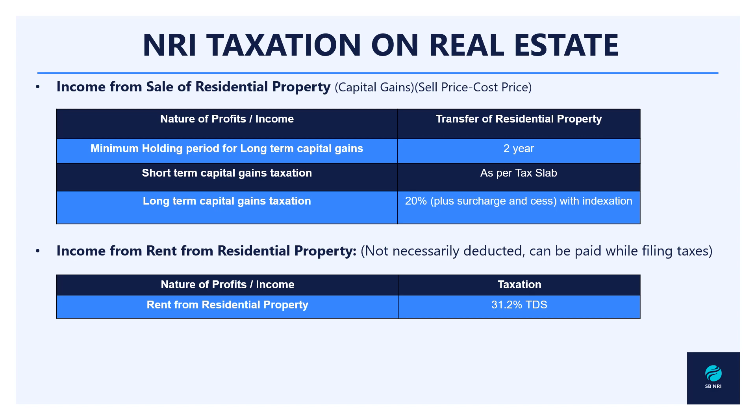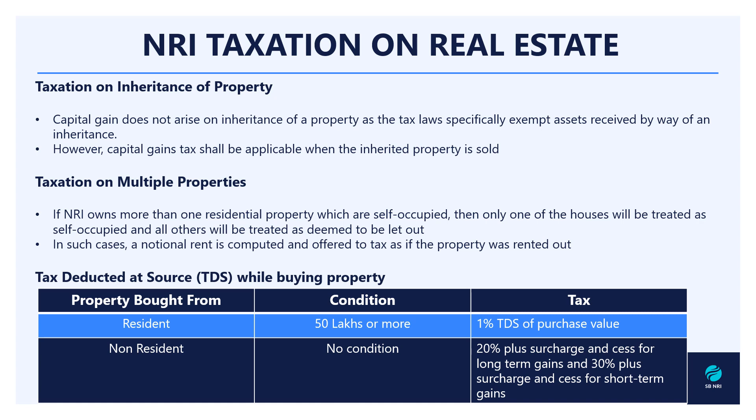If you have a property in India and have rented it out, income from rent is taxable. The basic TDS rate applicable is 31.2%, which has to be deducted at source. A tenant living in the property can deduct this 31.2% TDS and submit the remaining rent to you, paying the TDS directly to the authorities. Alternatively, the tenant can pay you the full rent and you can file the taxes by the end of the year when you file your returns.